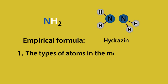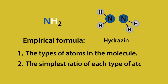One, the types of atoms in the molecule — in this case nitrogen and hydrogen — and two, the simplest ratio of each type of atom. The ratio of nitrogen to hydrogen in hydrazine is two to four, making the simplest ratio one to two.